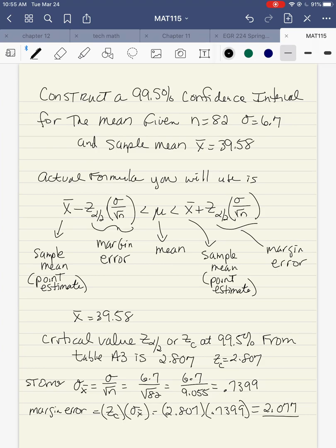The standard error, this is a calculation. I take sigma divided by the square root of n. Sigma in this problem is 6.7 divided by the square root of 82. The square root of 82 is 9.055, so 6.7 divided by 9.055 is 0.7399. From there, I calculate the margin of error, which is the critical value times the standard error. Critical value is 2.807. Standard error, I just calculated as 0.7399, and I get 2.077. This is the margin of error.